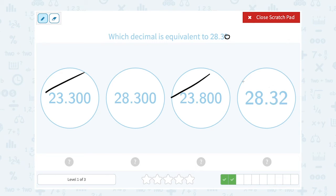Now 28.32 is close but it's a little different. Notice for 28.300 all they did was add some zeros on the end. That does not change its value.